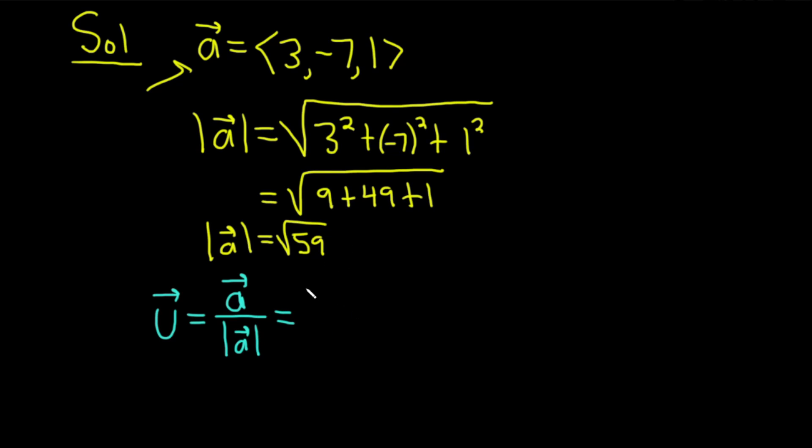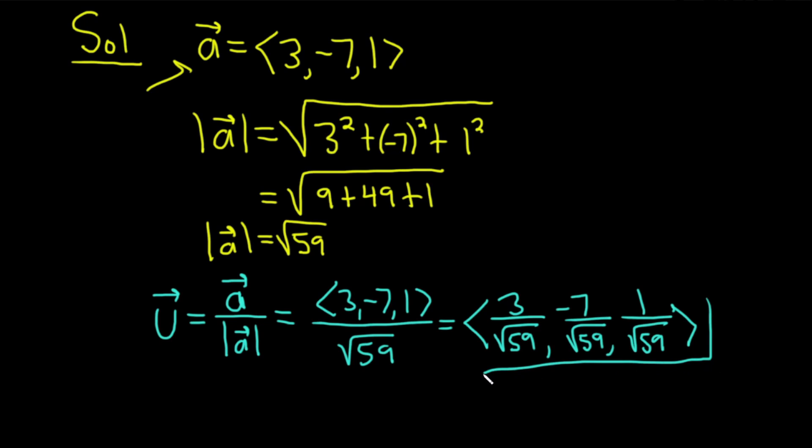This is equal to... So our vector was 3 negative 7 comma 1. And then it's being divided by the square root of 59. It's really being multiplied by 1 over the square root of 59 as well. So basically you're just dividing each component by the square root of 59. So you get 3 over the square root of 59. Negative 7 over the square root of 59. And the last component is 1 over the square root of 59. And this would be a unit vector in the direction of a.